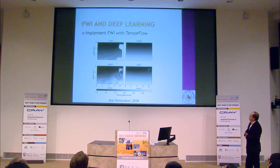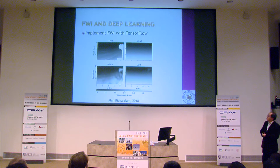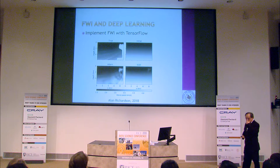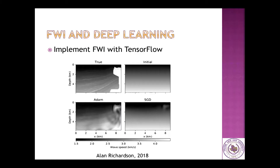There is some very exciting related work. One is from earlier this year implementing FWI with TensorFlow. Instead of creating a neural network to help directly, it uses TensorFlow software to build the FWI itself, which is quite interesting. FWI is generally a numerical optimization process where you calculate gradients, and there are similarities to how TensorFlow works, though there are some differences. It demonstrates the possibility of using TensorFlow to implement FWI.